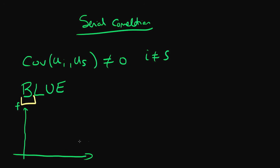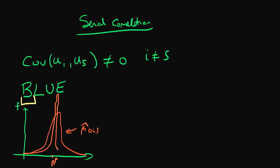Let's just remind ourselves of what this means. If I have some sort of sampling distribution of my estimators — say this one is my beta hat OLS — we know that OLS is still going to be unbiased in the presence of serial correlation. But it turns out there are other estimators which are also unbiased but have a lower sampling variance than OLS. This second estimator, let's call it beta tilde, has a lower sampling variance than beta hat OLS, even though both of them are unbiased. So if I take repeated samples from my population, then beta tilde gets closer to the true population parameter more frequently than beta hat OLS.